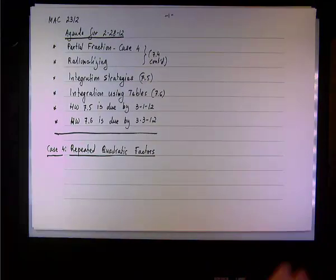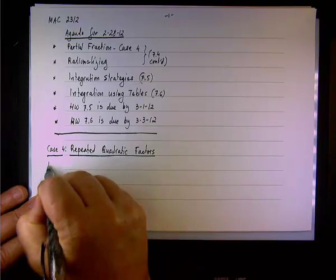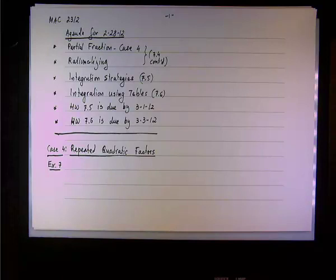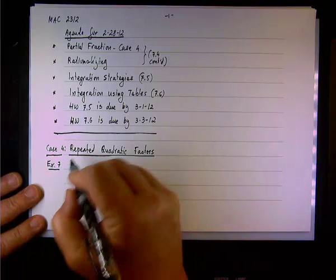We're looking at the case for repeated quadratic factors. In this example, we're not going to perform integration — we're just going to write the rational function as a sum of partial fractions. That is the assignment.